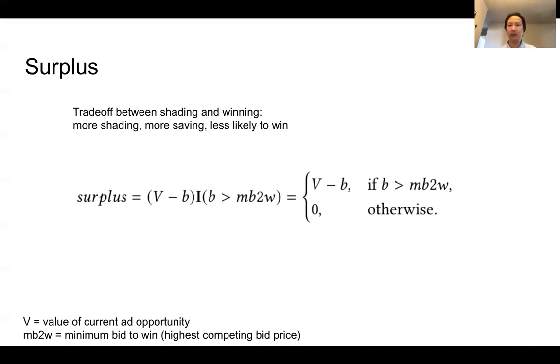To quantify this, we define the surplus as the difference between the value of the ad opportunity and the bid price if we win. However, if we lose, we define the surplus to be zero. So to do bid shading, we try to find the bid price that maximizes the surplus.